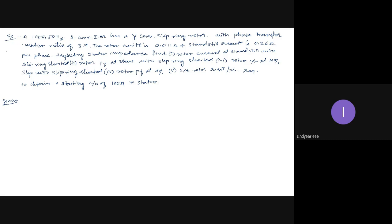Writing the given data: supply voltage V = 1100 volts, frequency f = 50 Hz. The stator is delta-connected and the rotor is star-connected, with a phase transformation ratio 1/k = 3.9. If it is greater than 1, it is stator to rotor; if less than 1, it is rotor to stator. Rotor resistance per phase R2 = 0.011 ohms per phase, and standstill reactance X2 = 0.26 ohms per phase. In three-phase systems, all parameters are per phase values.